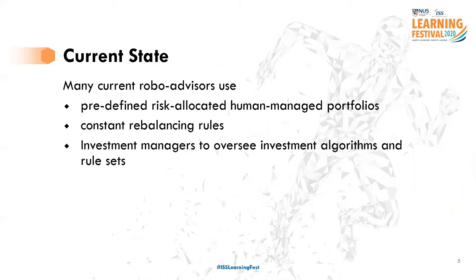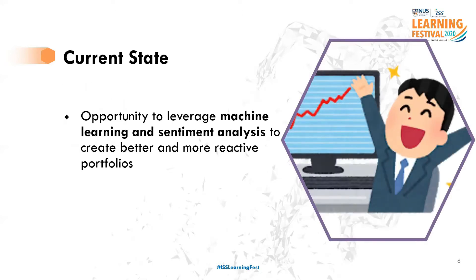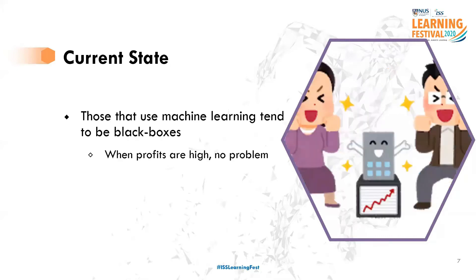Next, we move on to the current state of robo-advisors. In reality, many robo-advisors are basically just serving out previously human-managed portfolios in a new digital form. They might still be using simple predefined risk-allocated portfolios and constant rebalancing rules, and there will still be humans — basically the investment managers — to oversee investment algorithms and rule sets, to ensure they can intervene if things do not make sense. Hence, there is great opportunity to leverage machine learning to create better portfolios. And as many of us know, trading in the short term is also driven by popular sentiments, so we could use sentiment analysis to create more reactive portfolios.